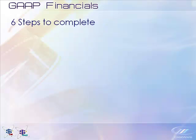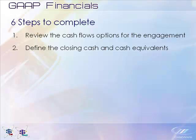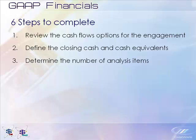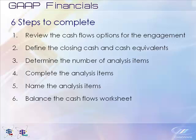There are six steps to complete in the preparation and analysis of the Cash Flow Worksheet. The first is to review the cash flow options for the engagement. Second, define the closing cash and cash equivalents. Third, determine the number of analysis items. Fourth, complete the analysis items. Fifth, name the analysis items. And sixth, balance the cash flows worksheet. Caseware recommends the firm pre-populate the cash flows worksheet in the master template with preferred mappings and descriptions prior to distribution. This will create a firm standard and save staff time.